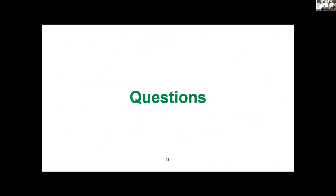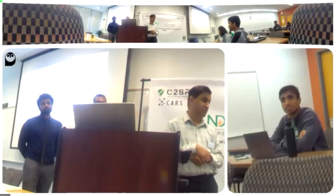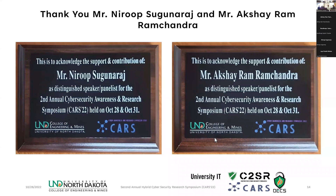Thank you, Nirup and Akshay. Now we can take questions. Based on your research findings, what do you see in terms of automation of certain scams? Which scams are more automated and have a good impact on victims? One of the things I've observed is getting voice calls that sound remarkably like human beings, but you can tell there's a hint of a robot. Despite that hint, it's really easy to get fooled, which ties back to the point of increasing sophistication to pull in victims. In the interest of time, thank you Nirup and Akshay for presenting your research and raising awareness at this cybersecurity event.